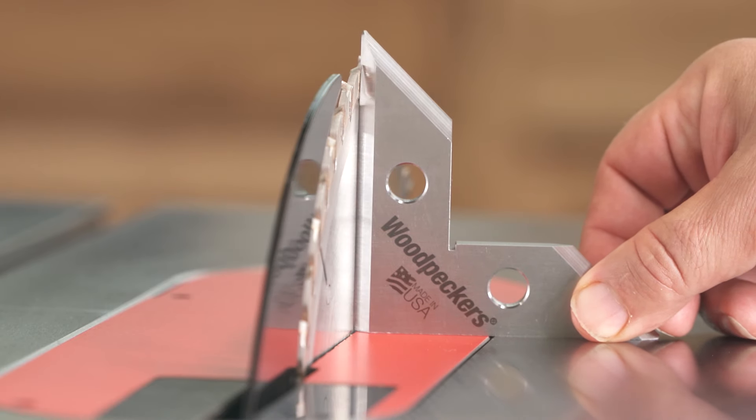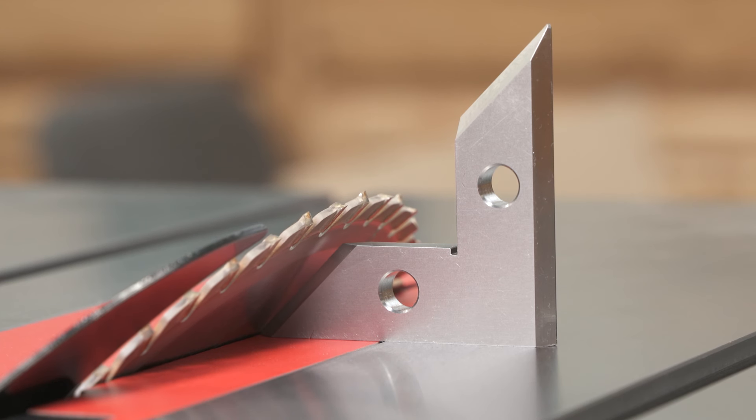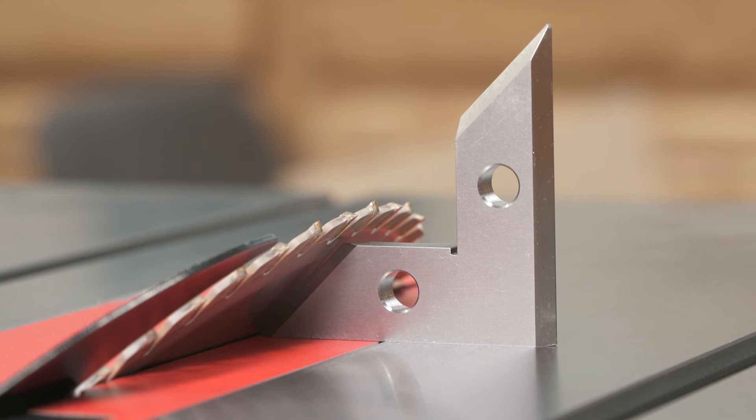At three and a half inches, the square's base is perfectly flat for stability on machine tables, and the reference edges are beveled, enhancing your view between the square and a fence or blade.